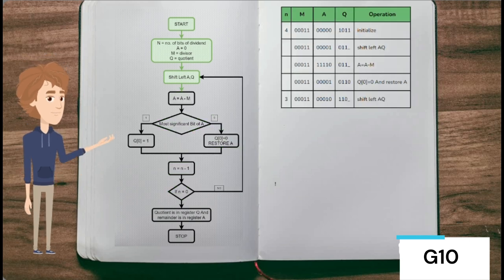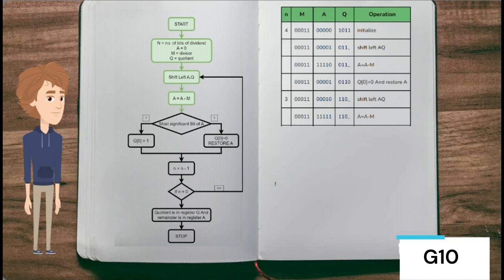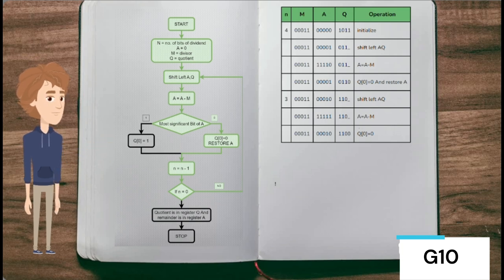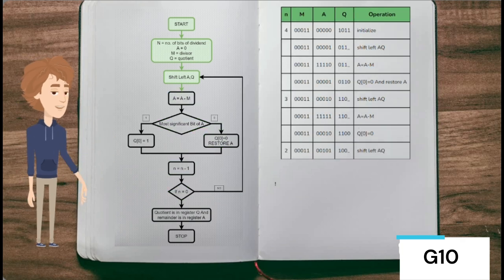In the next step, the content of registers A and Q is again shifted left as a single unit. The content of register M is subtracted from A and the result is stored in A. The most significant bit of A is checked — if it is 1, the least significant bit of Q is set to 0 and register A is restored.